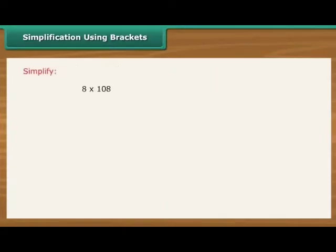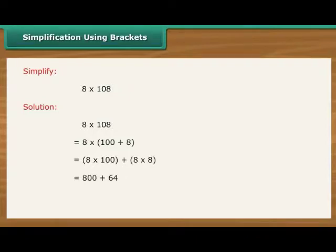The answer would be 17 into 109 is equal to 1,853. Let us simplify. This can be solved as 8 into 100 plus 8 is equal to 8 into 100 plus 8 into 8, which equals 800 plus 64, which is equal to 864.